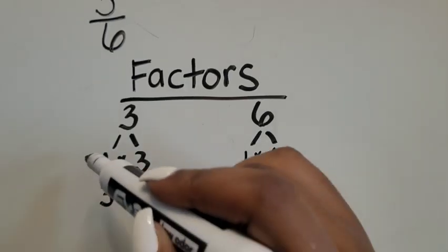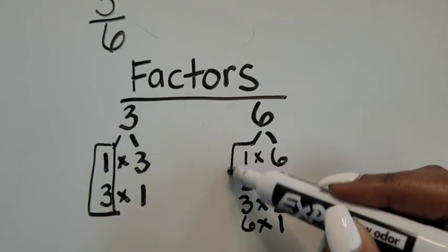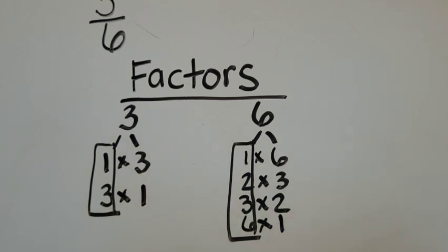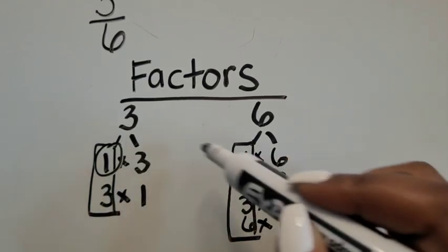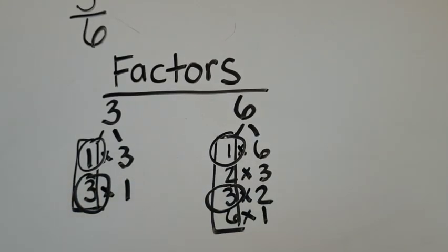From here you can see what numbers are repeated, those represent the factors of each of the numbers. So for 3 the factors are 1 and 3, for 6 the factors are 1, 2, 3, and 6. What do they have in common? They have the number 1 in common, and they have the number 3 in common.